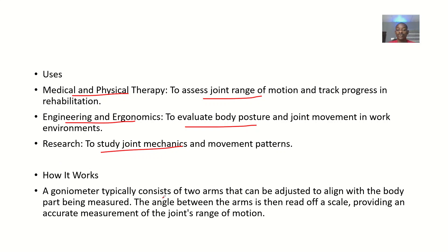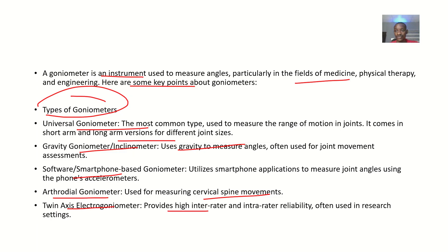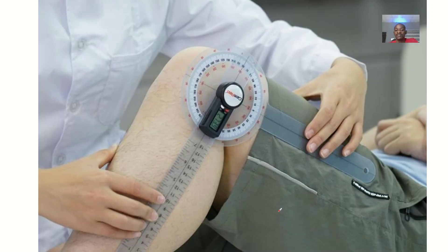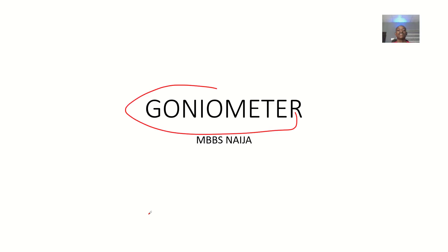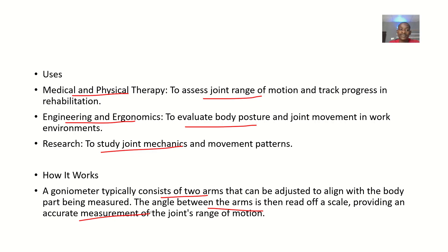A typical goniometer usually consists of two arms which can be adjusted to align with the body part being measured — whether arms or legs. The angle between the arms is then read off a scale, providing an accurate measurement of the joint range of motion.